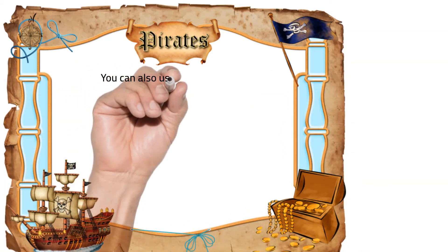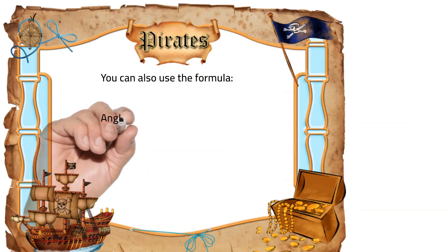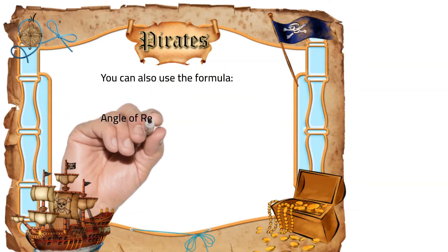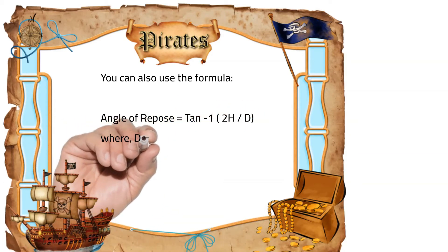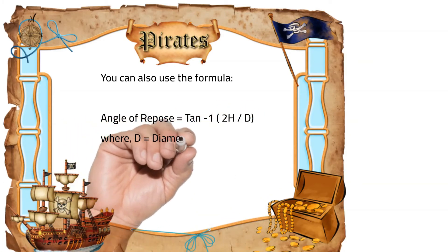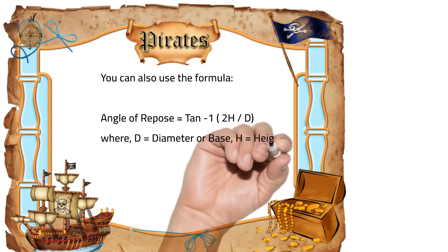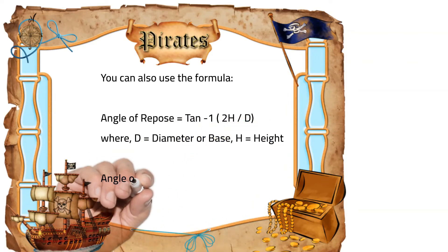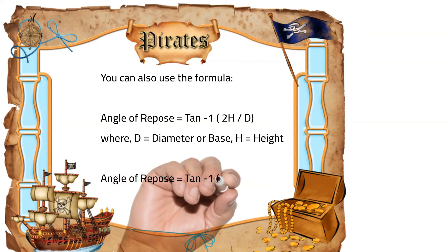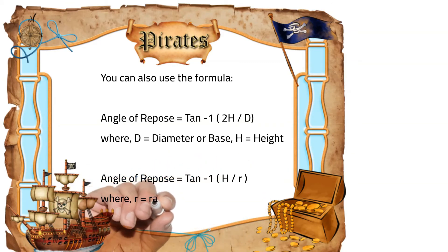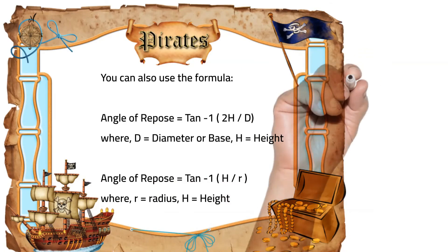You can also use the formula: angle of repose equals arc tangent of 2H over D, where D is equal to diameter or base and H is equal to height. Or you can use: angle of repose equals arc tangent of H over R, where R is equal to radius and H is equal to height.